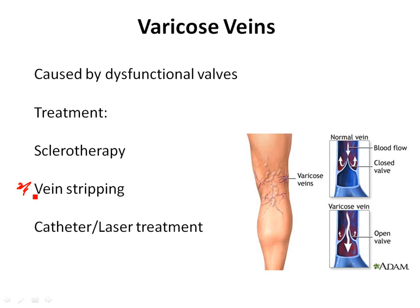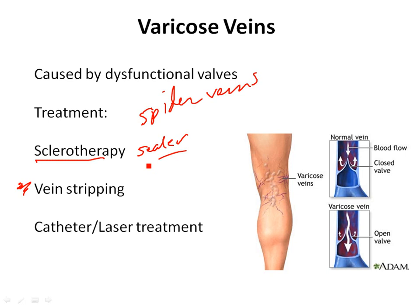Now there are better treatments. For smaller veins — what we call spider veins, those little spidery purplish vessels underneath the skin — they can use sclerotherapy. Sclerotherapy is for mild varicosities: they inject a sclerosant or sealer that closes off the vessels. When you seal off that vessel, there's no blood flowing through it, so you won't have the bulging vein. Collateral vessels will pick up the blood flow and move it back toward the heart. The sclerosant can be something as simple as a saline solution that burns and scars the vessel closed. It's usually done quickly in a dermatologist's office.